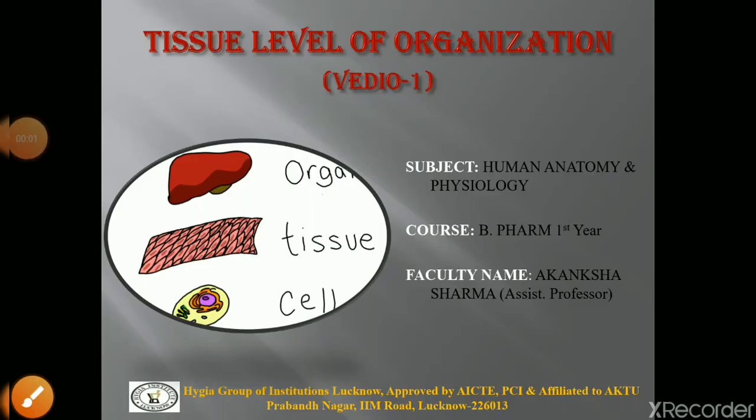Hello students, today we are going to discuss a new topic in human anatomy and physiology — that is the tissue level of organization. We previously talked about the structural levels of organization, which included the atomic level, or the chemical level, the cellular level, and today we will talk about the tissue level.